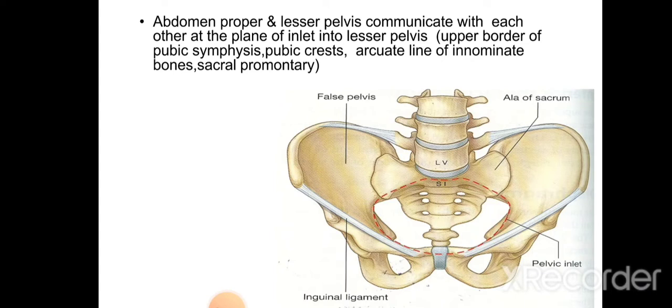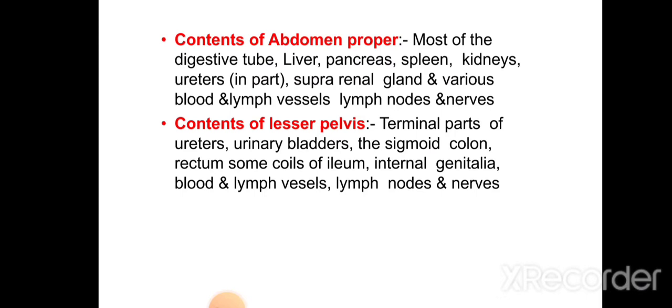In this diagram we can see the red line showing the boundaries of the pelvic inlet. These boundaries are formed by the upper border of the pubic symphysis, pubic crest, arcuate line, and the sacral promontory. This line demarcates the difference between the abdomen proper and the lesser pelvis. Contents of the abdomen proper include the digestive tubes, liver, pancreas, spleen, kidneys, parts of ureters, suprarenal glands, and various blood vessels, lymphatic vessels, and nerves.